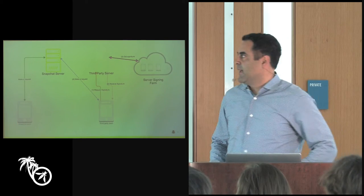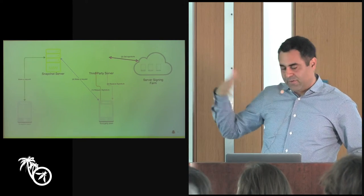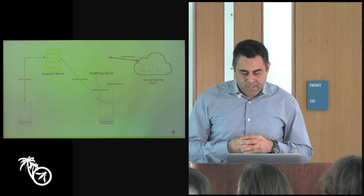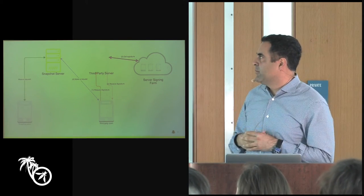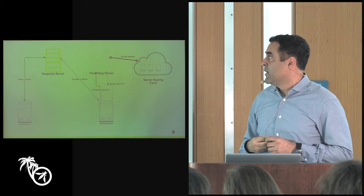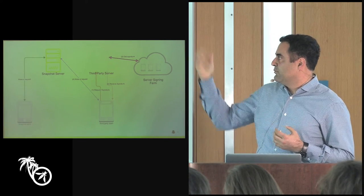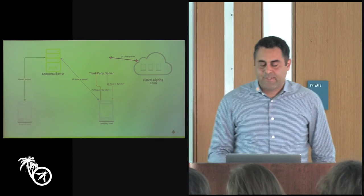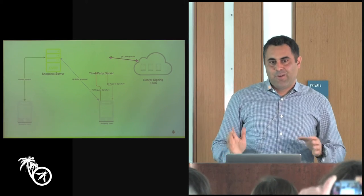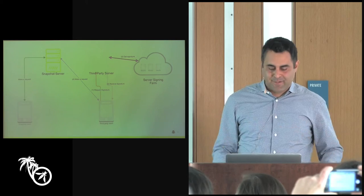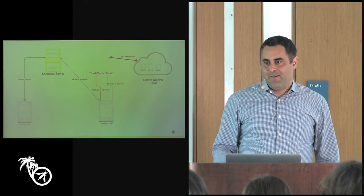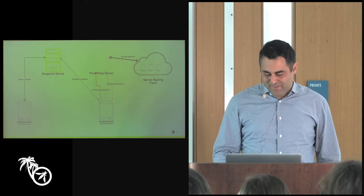Those signing servers — they can't really lift our code, so they actually use our own application. They run a server farm of mobile clients running our own apps and use them as signing oracles. The way it works: on the bottom left, our app talks with our server. On the right, a third-party client makes a request to a third-party server saying 'please sign this request for me.' The third-party server sends it to a signing farm using our own apps, gets the signature, returns it to the third-party app, which can then pretend to be our own app. This is our current challenge — we think we have good ideas to combat it, but it's still a cat-and-mouse game.